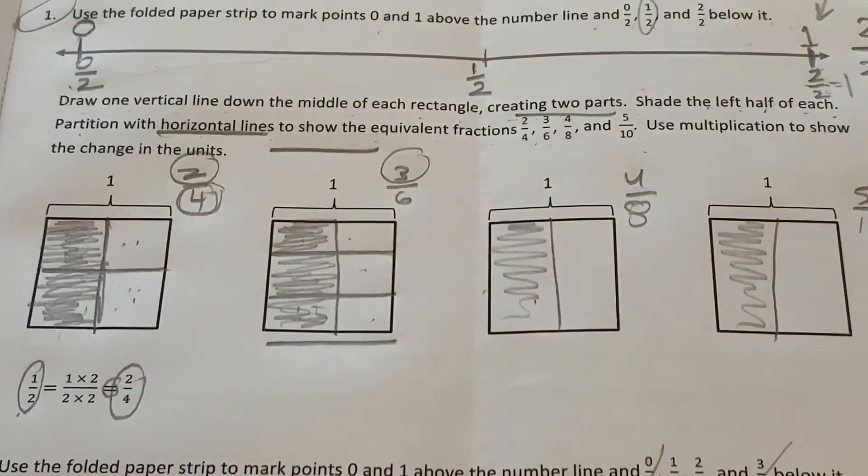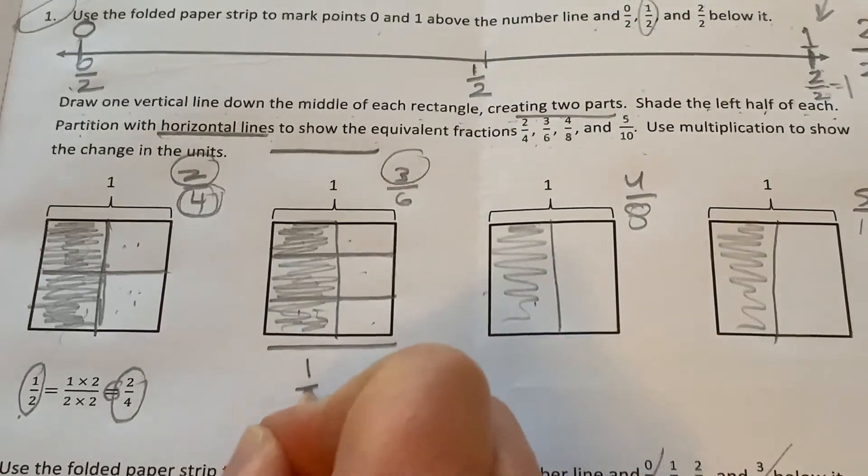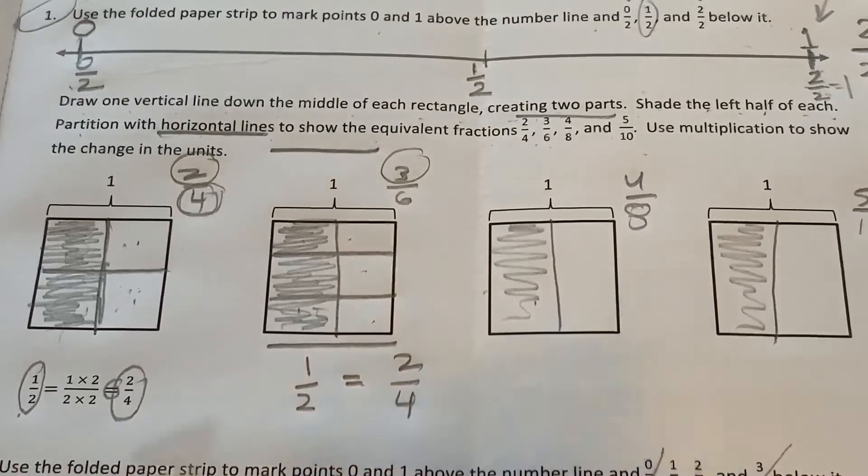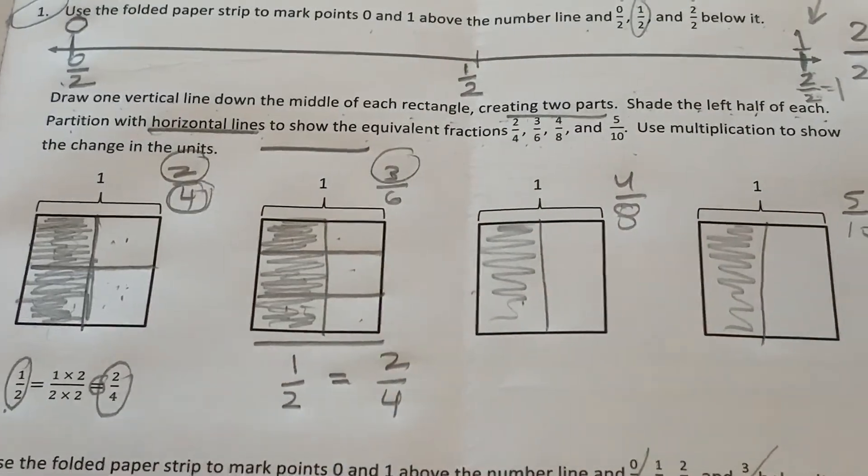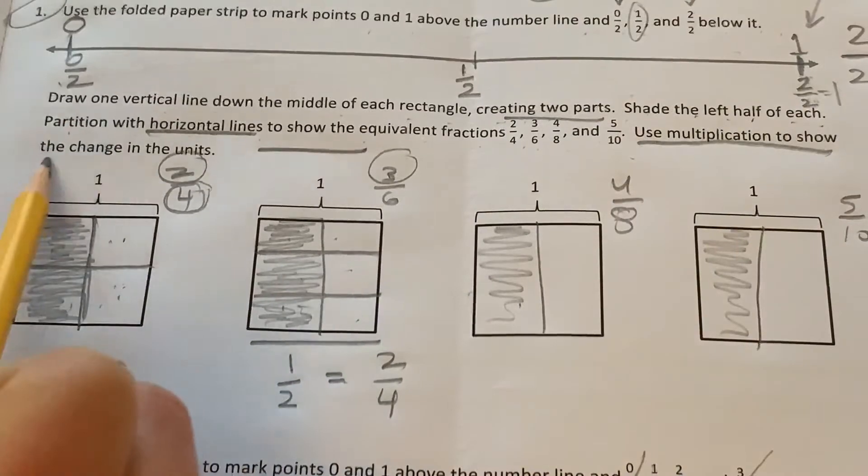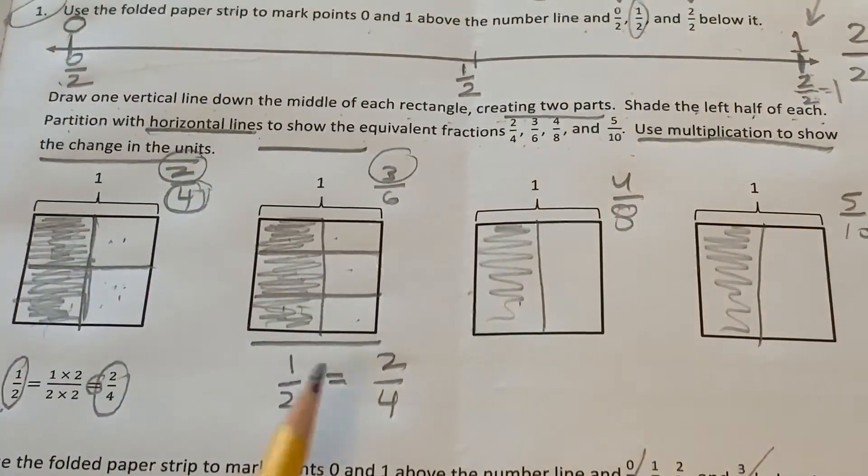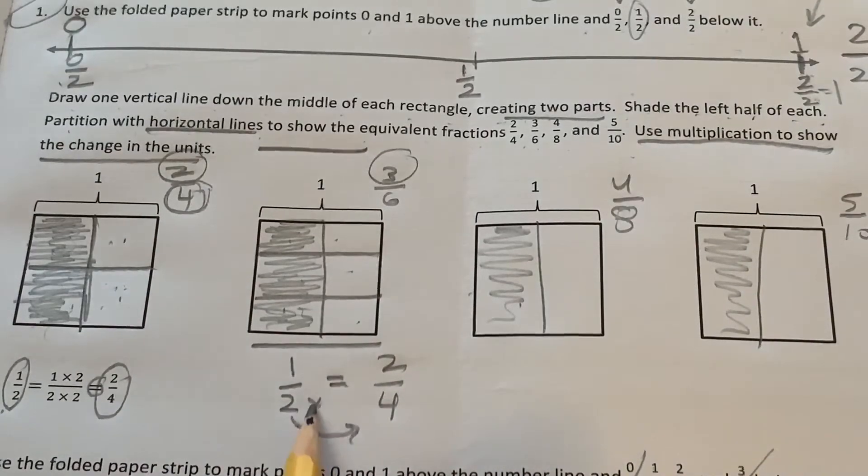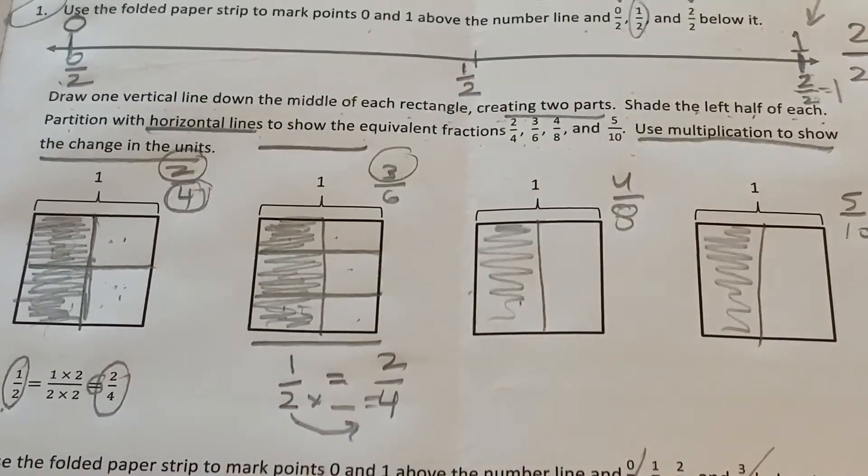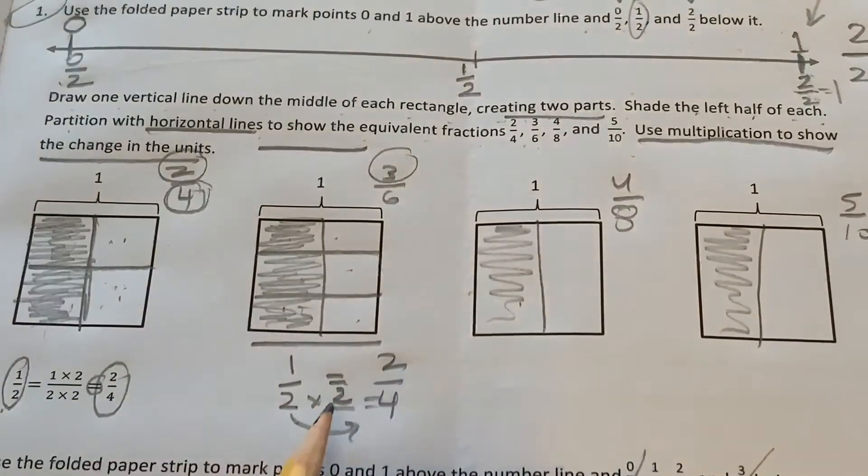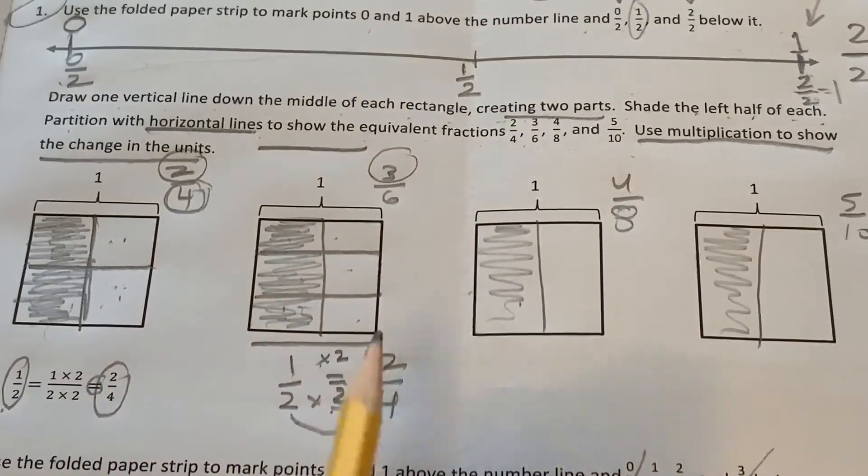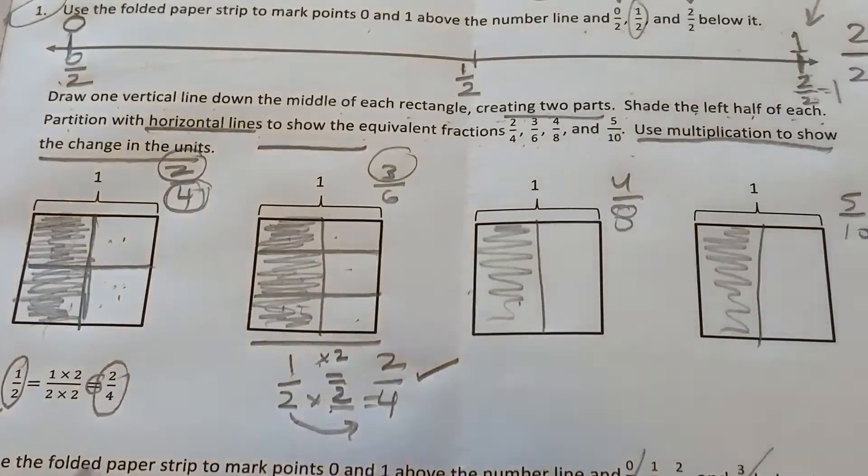Look, it's the same. I just proved again that one half equals two fourths. And then the last part of the problem, it said, use multiplication to show the change of units. So again, like we did in the warm-up, they want to know, like, two times what equals four? Two times what equals four? That's right, it's two. Whatever you do to the bottom, you have to do to the top. One times two is two. Yep, that works. Another equivalent fraction.